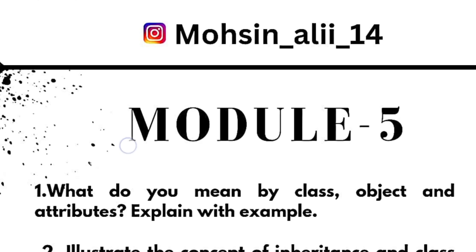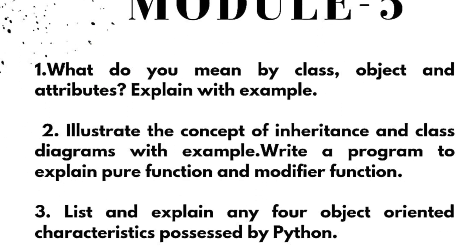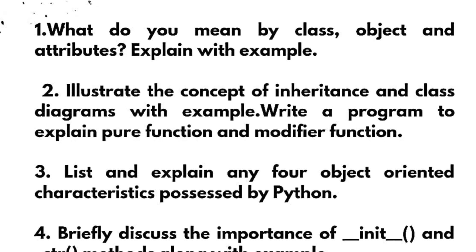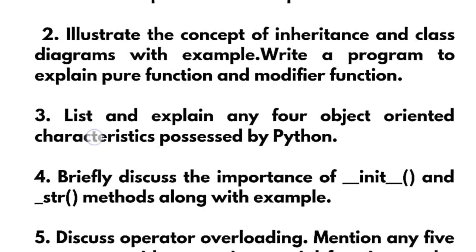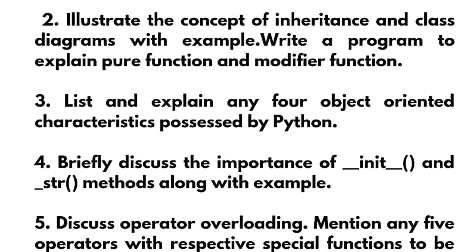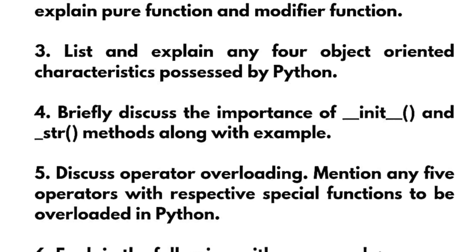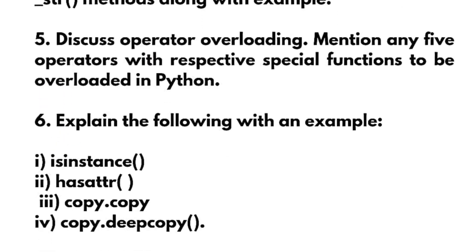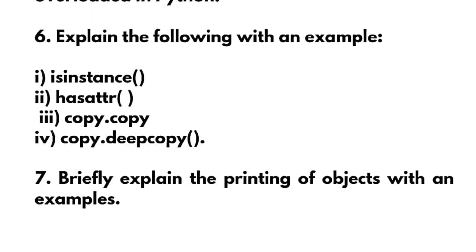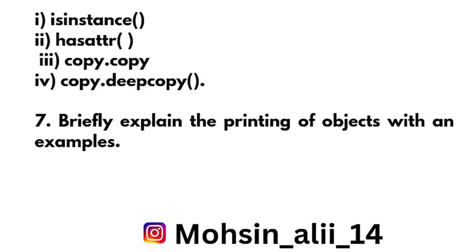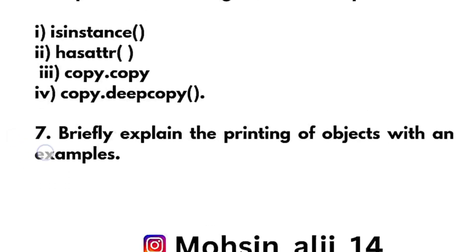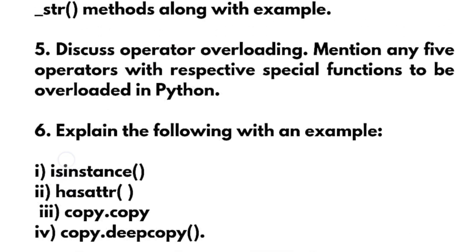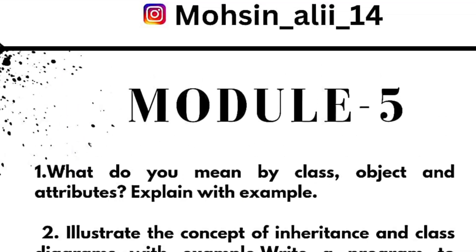In Module 5, cover: what do you mean by class, object, and attributes — explain with example. Illustrate the concept of inheritance and class diagrams with example. Write a program to explain pure function and modify function. List and explain any four object-oriented characteristics possessed by Python. Briefly discuss the importance of __init__ and __str__ methods with example. Discuss operator overloading and mention any five operators with respect to special functions to be overloaded in Python. Explain copy, deepcopy, and printing of objects with an example.